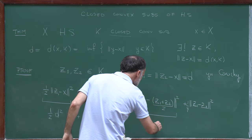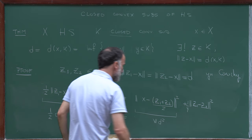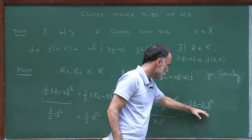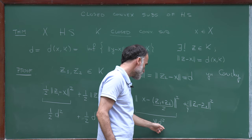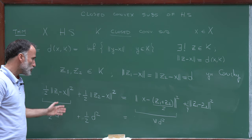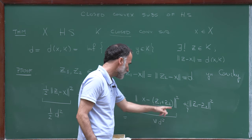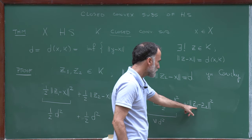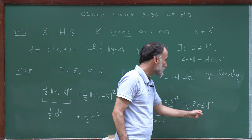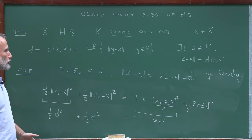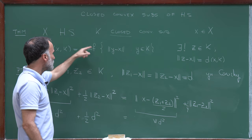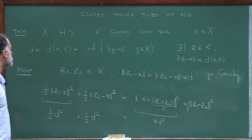For this identity to hold, we need ‖X − (Z1+Z2)/2‖² to equal D² and ‖Z1 − Z2‖² to equal 0. So the norm of Z1 minus Z2 is zero, which means Z1 equals Z2. That proves uniqueness: if two points in K attain the infimum, they must be equal. This completes the proof of the theorem.